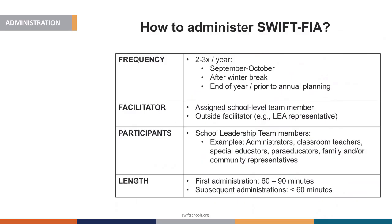FIA is a self-assessment completed by a school leadership team, and it is conducted two to three times per year. First, we recommend that it's completed in September or October at the beginning of the academic year. It may also be completed after winter break, typically in January, and then we recommend it's completed at the end of the year or prior to annual planning — typically April or May.